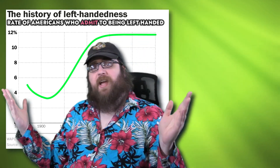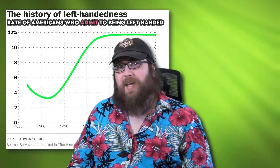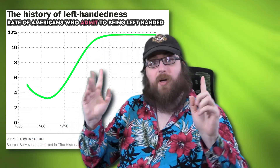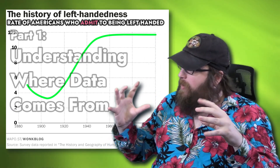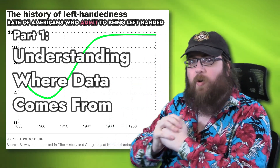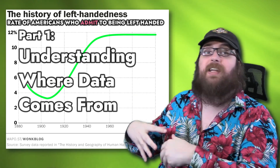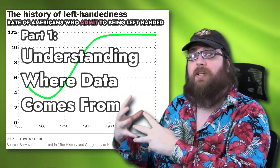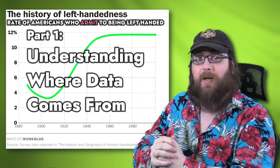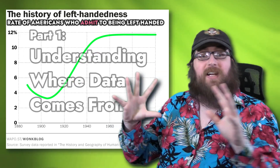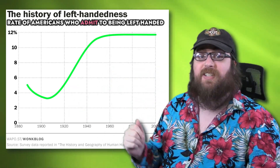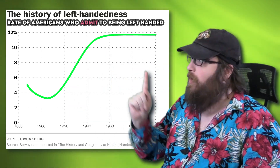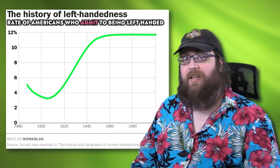So even though this chart implies that it's measuring the actual number of left-handed people, what it's really measuring is how many people are willing to admit that they're left-handed, which is fundamentally different. Now you may be asking why someone would lie about being left-handed, and we will get to that in a moment. But I really want to hammer home this lesson about understanding the origins of where data comes from, because that's going to help you understand a whole bunch of other charts, graphs, and statistics that are much more important than this one.